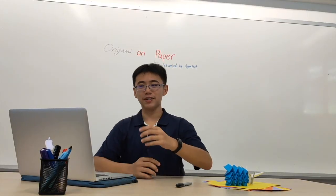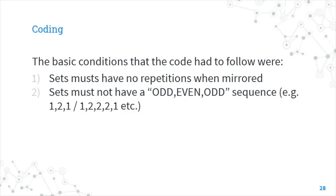So there were some basic requisites that our code had to have. It was that the sets must have no repetitions when mirrored. So when coding out, we must make sure that there were no duplicate sets in any order. The sets must also not have an odd sequence as previously mentioned, such as a 1-2-1 or a 1-2-2-2-1 and so on.